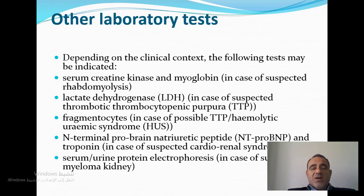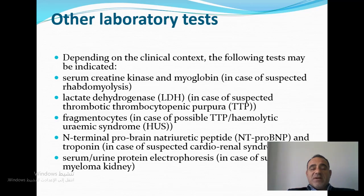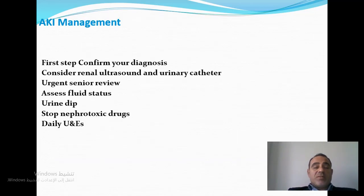Other laboratory tests, dependent on clinical context, may be indicated: potassium, creatinine, myoglobin for rhabdomyolysis, LDH, for TTP/HUS, blood film for fragmented RBCs, BNP for possible cardiorenal syndrome, and protein electrophoresis for multiple myeloma.